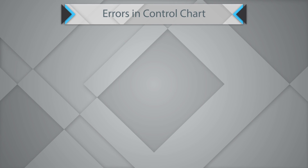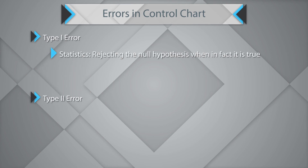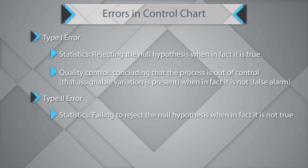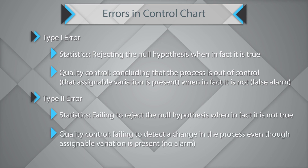While making control charts, there are two types of errors possible. A Type 1 error is statistically rejecting the null hypothesis when in fact it is true. A Type 2 error is failing to reject the null hypothesis when in fact it is not true. In the context of control charts, a Type 1 error is concluding that the process is out of control and that assignable variations are present when in fact it was a false alarm. A Type 2 error is failing to detect a change in the process even though assignable variation is present — you have not had an alarm.